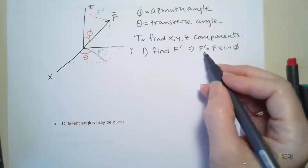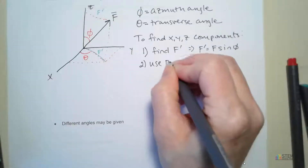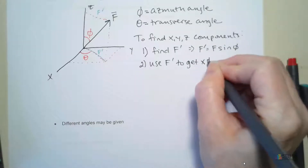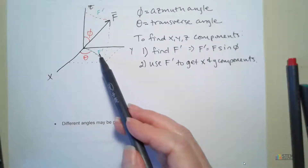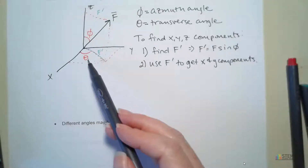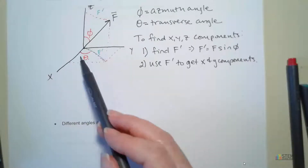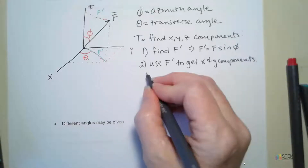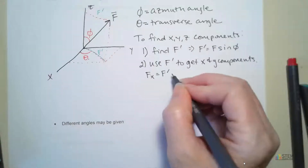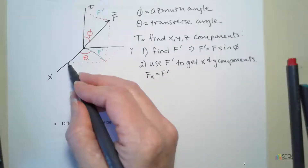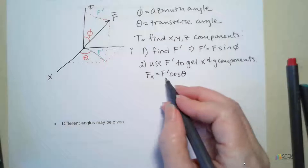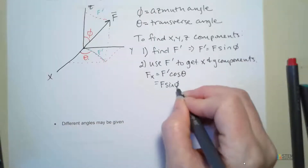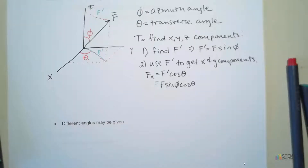Now we're going to use this F prime to get our X and Y components. If this is F prime and we know this angle theta, we can find X and Y because this right here — the dashed lines — is on the XY plane. So Fx is going to be F prime cosine theta. Plugging in what F prime is, we get F sine phi cosine theta. That's how you use F prime to get the X component.